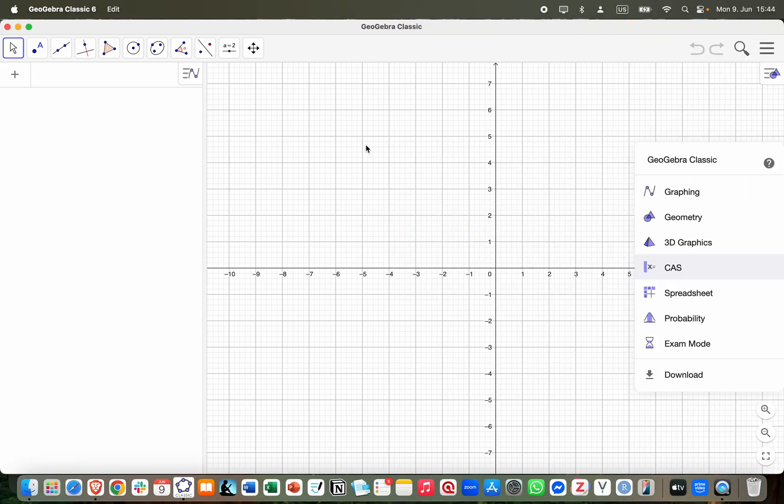Okay, so this is what GeoGebra looks like. This is the GeoGebra Classic 6. And here we have the algebra view. This is where you type your equation. So for example f of x equals x squared. As you can see, if you type the equation here the graph will appear here.